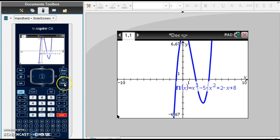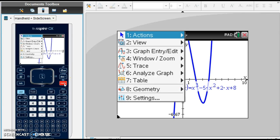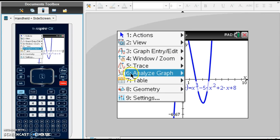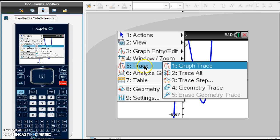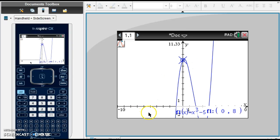Go ahead and open up the menu and we want to analyze the graph. Now let's trace it. I want to trace the graph. Click 1. And you can see my cursor perched up there.